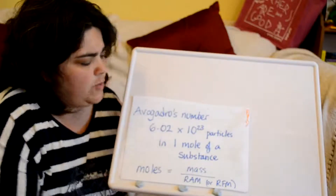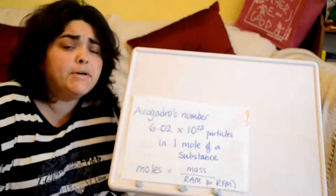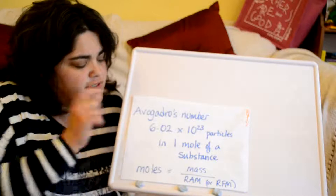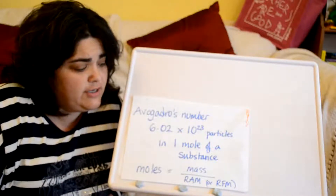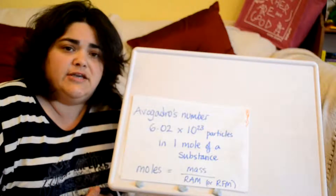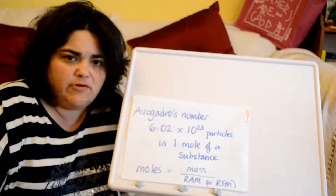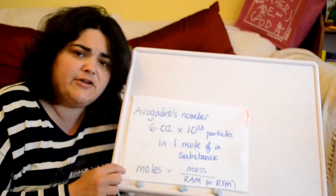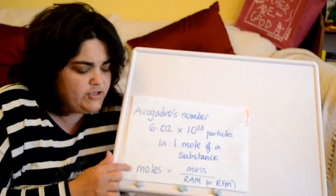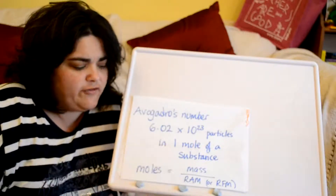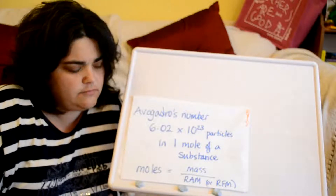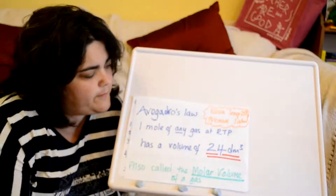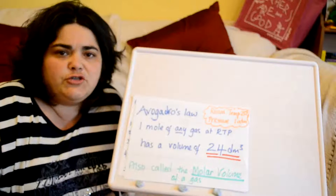You'd have met Avogadro before when we looked at moles. Avogadro came up with a number to say how many particles there were in any one mole of a substance — 6.02 times 10 to the 23 particles in a mole of any substance. We can use that to find how many particles are in part of a mole. I also want to remind you of the equation for calculating moles: mass over the relative atomic mass or relative formula mass. It's used a lot in C3.